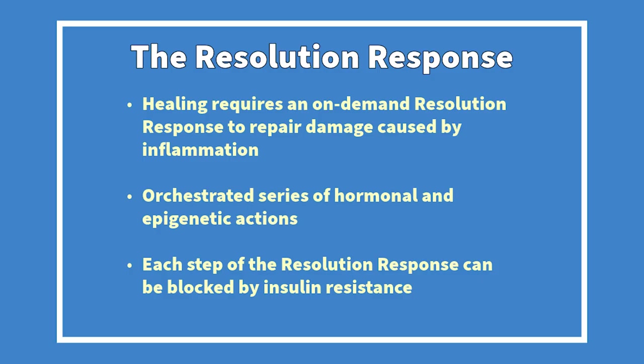For example, if you cut your hand, initially there's pain, swelling, and redness — that's acute inflammation. But if your resolution response is working correctly, within a few days the hand heals completely, as if you turn back the hands of time. Healing requires an on-demand resolution response to repair damage caused by inflammation — a highly orchestrated series of hormonal and epigenetic actions. Most importantly, each step of the resolution response can be blocked by insulin resistance, because insulin resistance disrupts your metabolism.